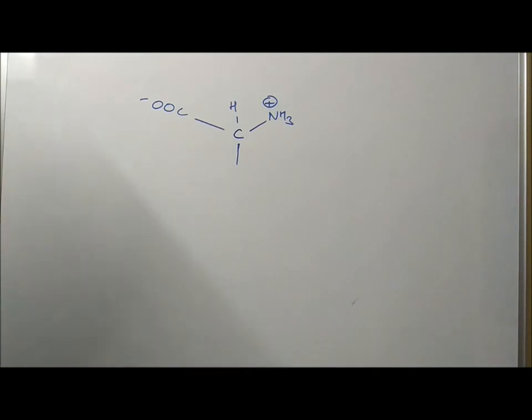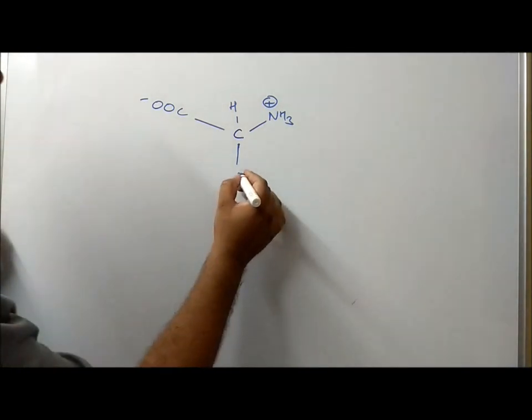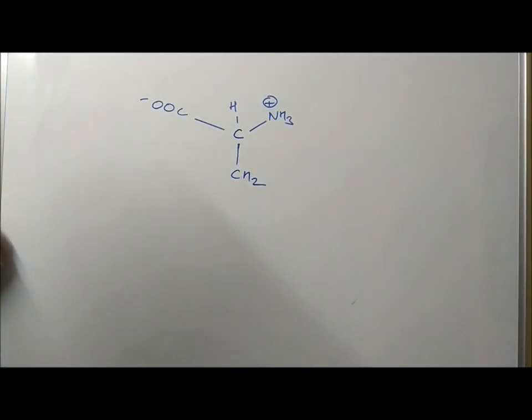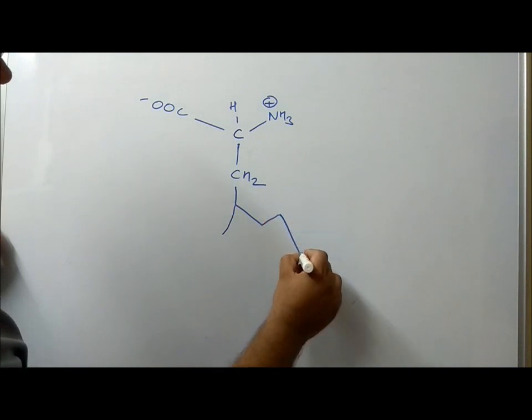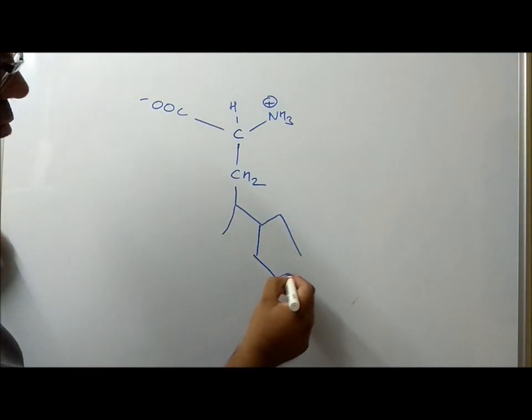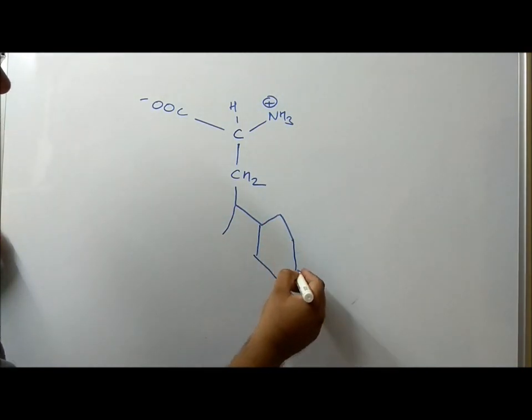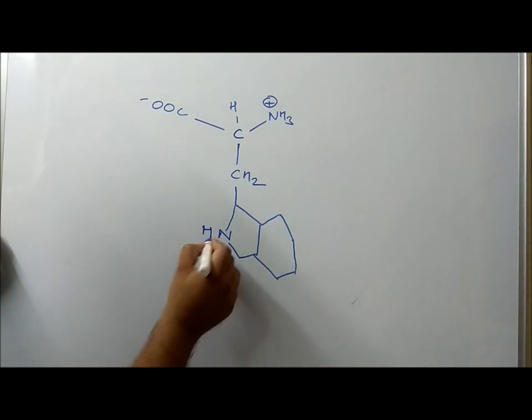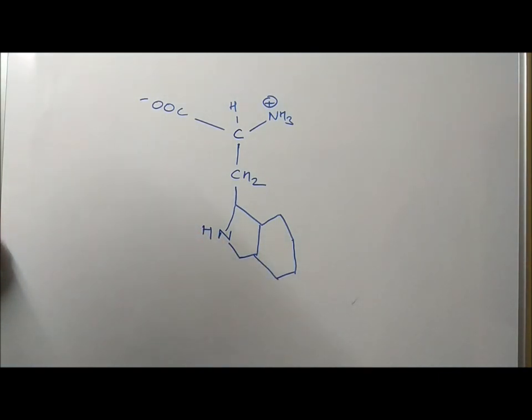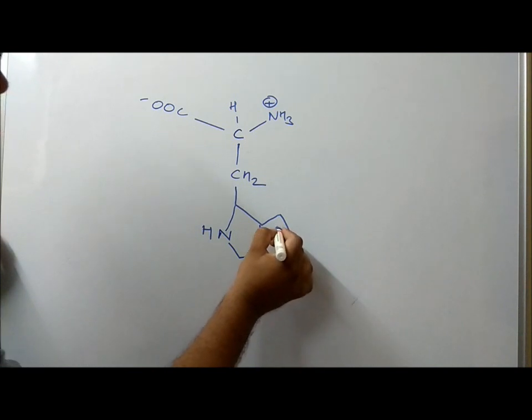Tryptophan is a molecule which is abbreviated as W. So if you make a capital W, and one side of W you make a hexagon, the other side make a pentagon with nitrogen. Again, satisfy the condition for nitrogen and carbon, so this is the structure for tryptophan.